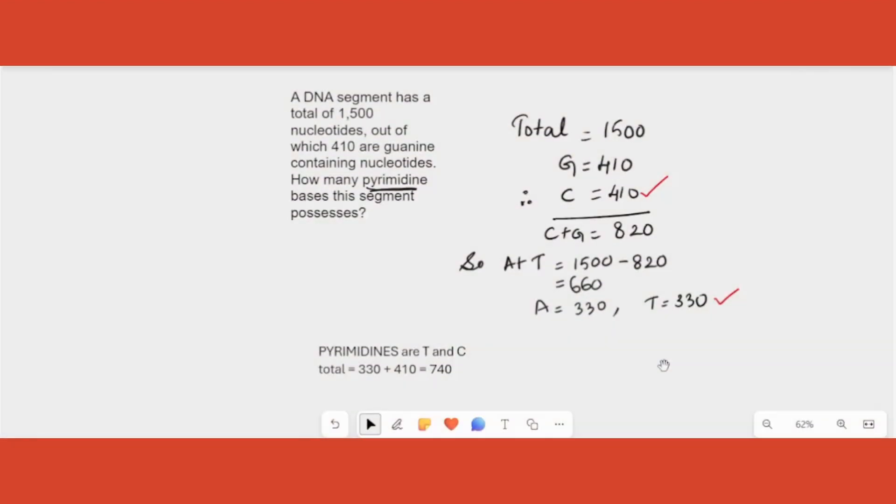So in this question I solved it for you so that it is easy for me to explain as well. In this question they are asking a DNA fragment has 1500 total nucleotides. In that guanine number is given - 410 is the guanine number. When you have guanine number you can easily write cytosine number which is equal to the same. And that is also 410 now. What will be total of C plus G then? You add this you get a number 820.